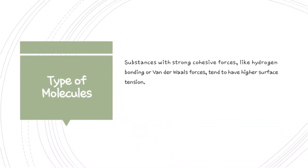The next parameter is type of molecule. Substances with strong cohesive forces like hydrogen bonding or van der Waals forces tend to have higher surface tension. For example, compare water and oil. Water molecules are more cohesive due to hydrogen bonding, leading to higher surface tension. Whereas in the case of oil, the molecular force is weaker — they have an intermolecular force which is comparatively weak, resulting in lower surface tension.